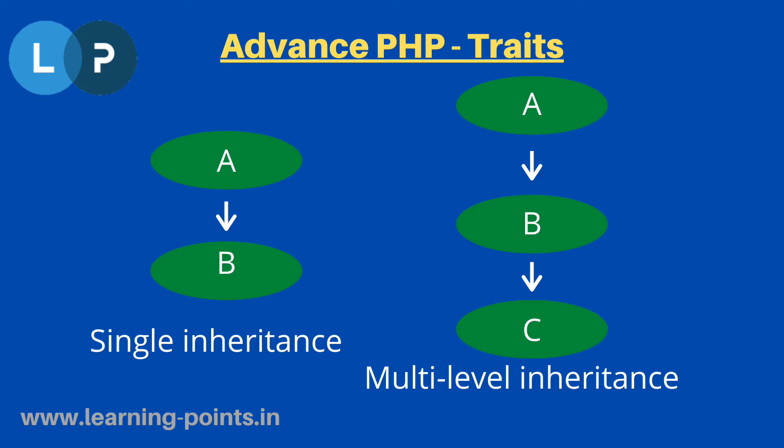The first type is single inheritance and the second is multi-level inheritance. Here, A is the parent class and B is the child class. The properties and methods come from class A, and we can use them in B by extending class A.